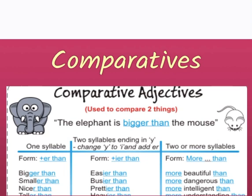As you can see in this slide, we use comparative adjectives to compare between two things. As you can see in the picture, we have the elephant — the elephant is bigger than the mouse. So we compare between the elephant and the mouse; one of them is bigger than the other. The rule of comparative adjectives: the first rule is for one syllable — we add -er, then put 'than'. For example: bigger than, smaller than, nicer than, taller than.